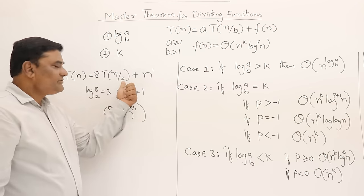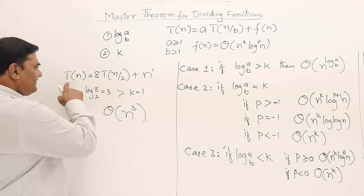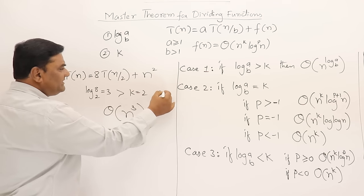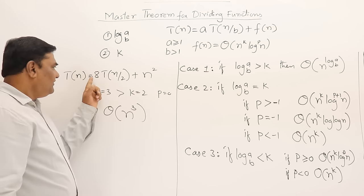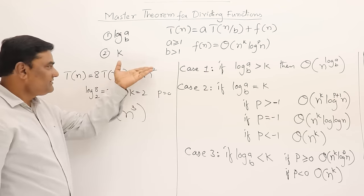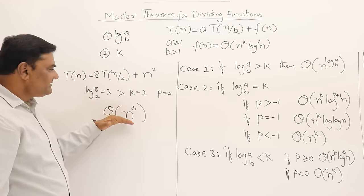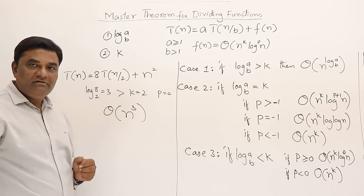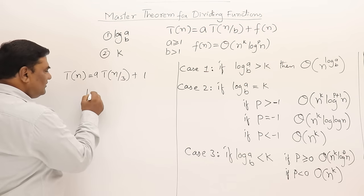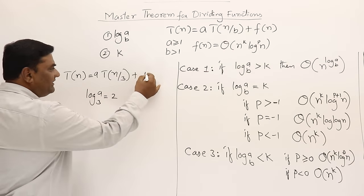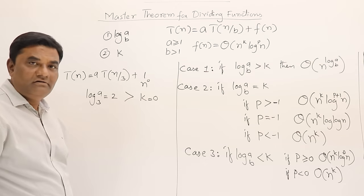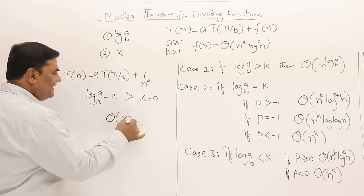If the recurrence is T(n) = 8T(n/2) + n², then k=2, log(8) base 2 = 3. Since 3 > 2, still Case 1: answer is Theta(n^3). Another example: T(n) = 9T(n/3) + 1. log(9) base 3 = 2, k=0. Since 2 > 0, Case 1: answer is Theta(n^2).